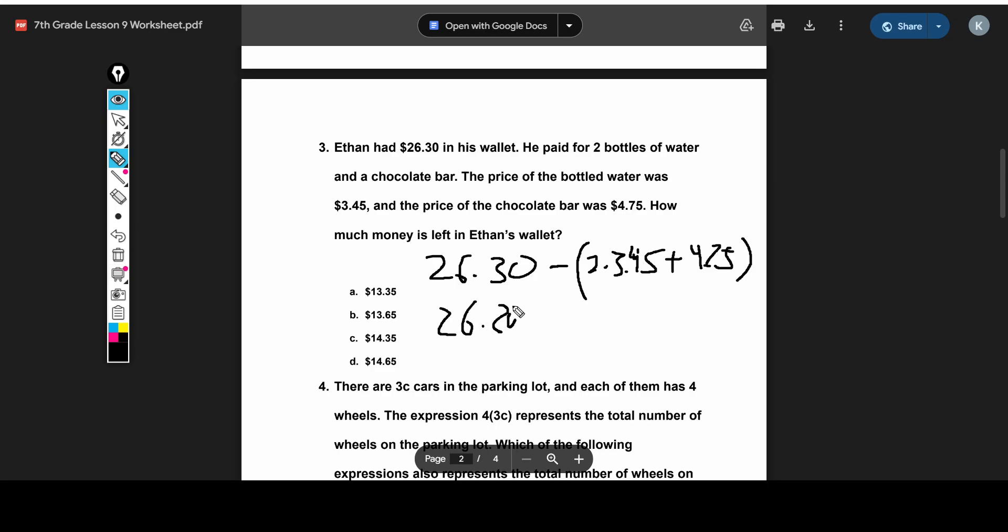And we have to put that all in parentheses, since they're all being bought. And so 2 times 3.45 is 6.90 plus 4.25. And so we get 26.30 minus, and then when you add this together, you get 11.25. And when you do that subtraction, I'm sorry, 11.15. And then when you do that subtraction, did I do something wrong here? Oh, this should be 4.75. So then you have 4.75, and then when you add this together, you'll get 11.65. And then when you do that subtraction, you'll end up with 14.65. And so your answer should be D.